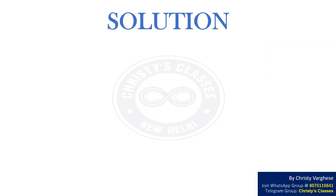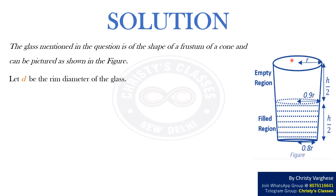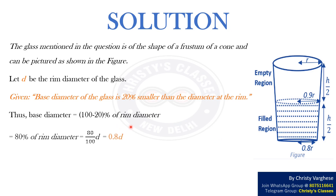Solution. The glass mentioned in the question is of the shape of a frustum of a cone and can be pictured as shown in the figure. Let d be the rim diameter of the glass. Given that base diameter of the glass is 20% smaller than the rim diameter, base diameter equals 80% of the rim diameter, which equals 0.8d.